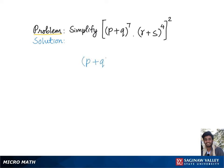To simplify (p + q) raised to the seventh power times (r + s) raised to the fourth power, and the whole group raised to the second power, let's go over the power rule, which says to raise an exponent to another exponent, we need to keep the base and simply multiply the exponents.